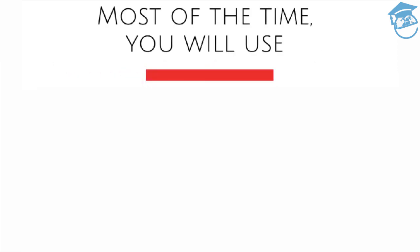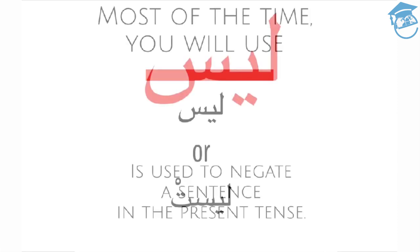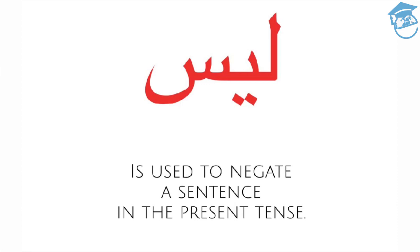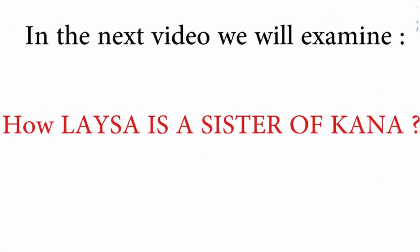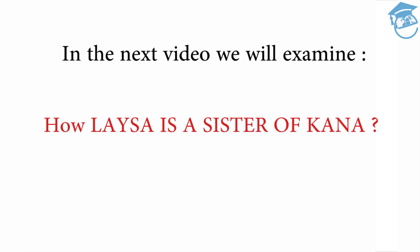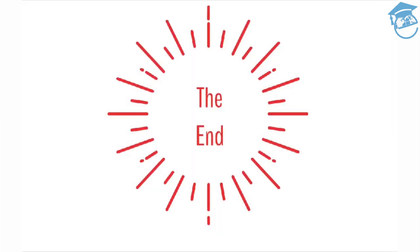So now you know how to conjugate the verb leysa in the past tense. Most of the time you'll only use laysa or laysit, and we'll discuss why this is so in part two. One more fact about leysa: although being a past tense verb, it is used to negate a sentence in the present tense. In part two, we'll examine how leysa is a sister of kana, and how this affects its use within the sentence. If you like our video, remember to subscribe to our channel. Maa salama.